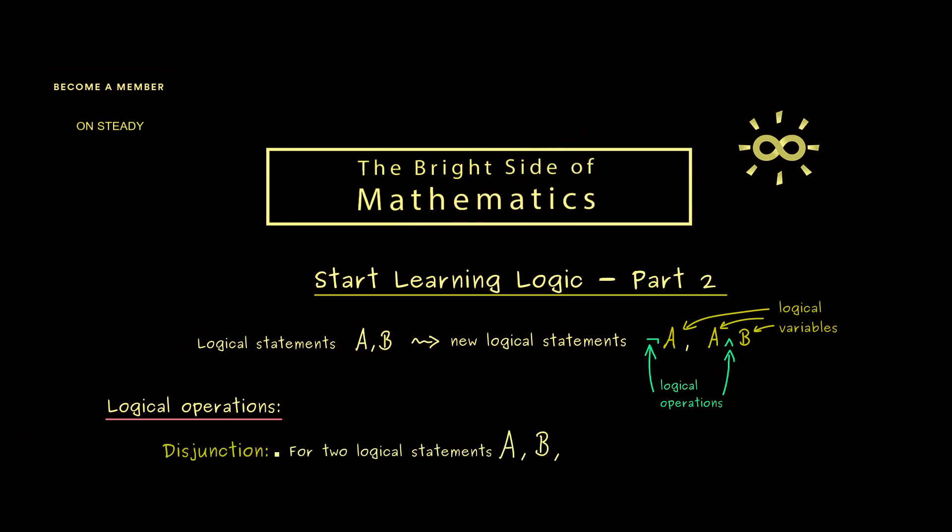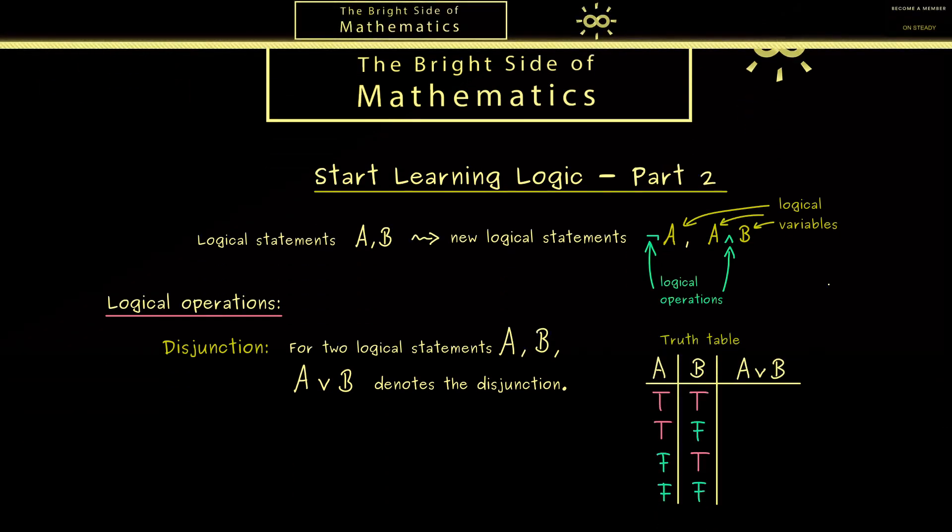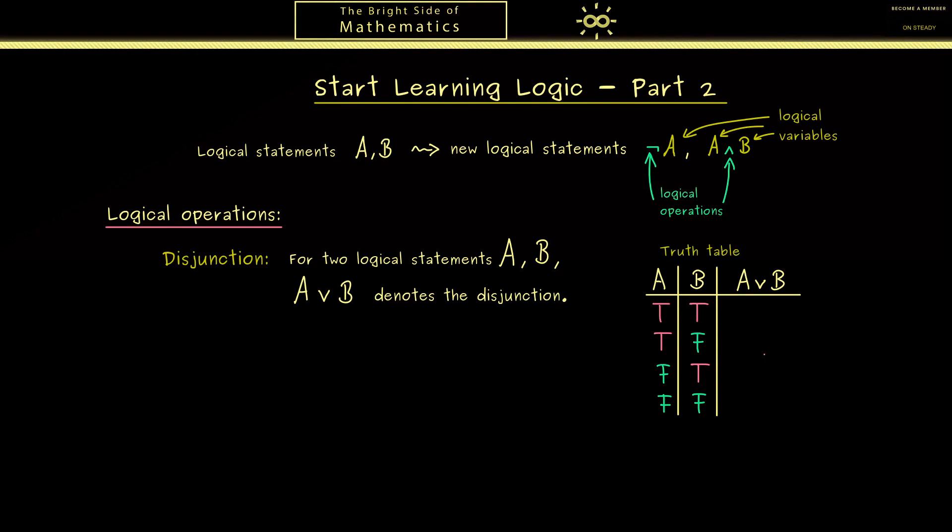The next one is the so-called disjunction, also defined for two logical statements A and B. It's similar to the AND operation because it's the OR operation. The symbol we use here is the flipped one, just a V. As in the last video, we can define the symbol by writing down the truth table. The disjunction should be true when at least one of the two constituents is true.